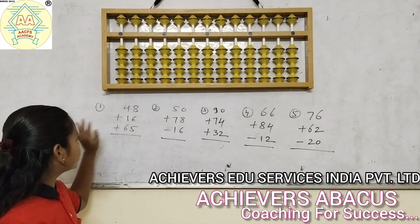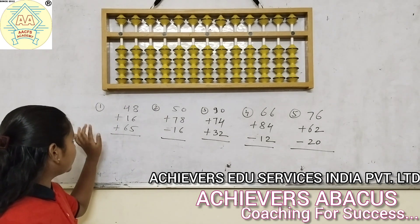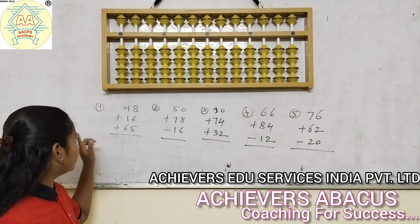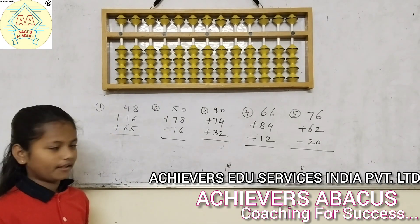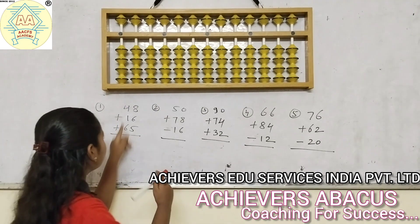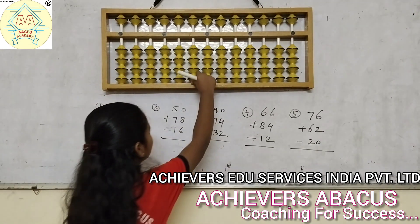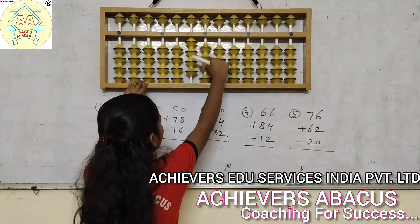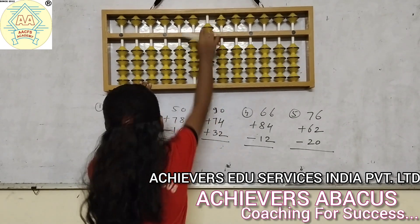The first sum is: add 48, add 16, and add 65. First of all we will do add 48.